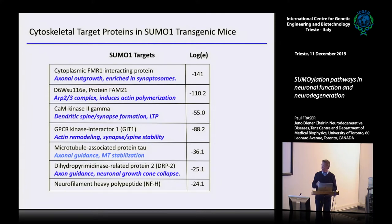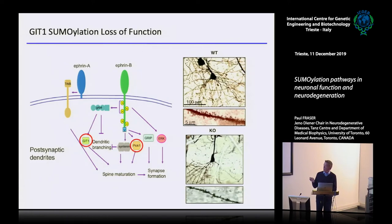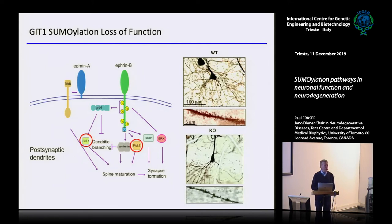One candidate is GIT1, the GPCR kinase interactor 1, which is also related to the ARP2-3 complex. Many of these proteins that came out are good candidates for the changes in spine density. GIT1 is involved in efferent signaling and TrkB, along with protein interactors kinase C and PIX, which regulate spine maturation and synapse formation. In loss-of-function knockouts, you get a similar phenotype to what you see in SUMO1 overexpressing mice, indicating a loss of function for these SUMOylated proteins — both synaptotagmin and the ones regulating dendritic spine formation.